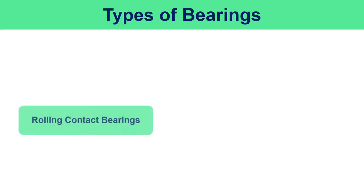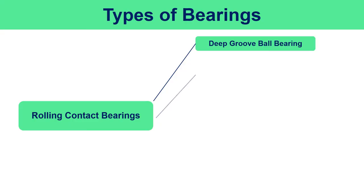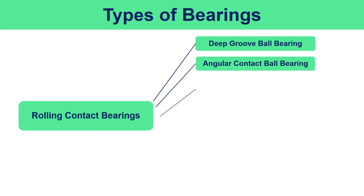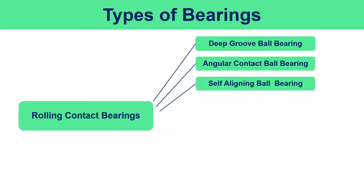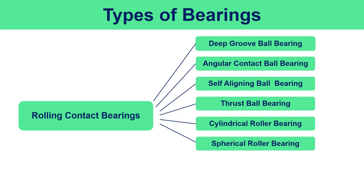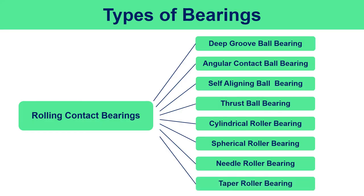Rolling contact bearings include: deep groove ball bearings, angular contact ball bearings, self-aligning ball bearings, thrust ball bearings, cylindrical roller bearings, spherical roller bearings, needle roller bearings, and taper roller bearings. Now let us discuss in detail the assembly and properties of these types.